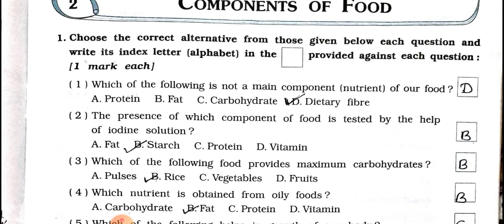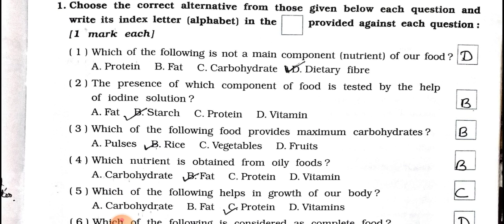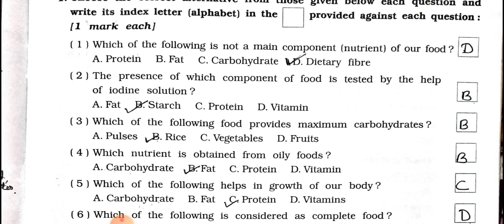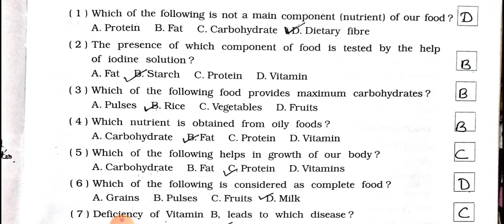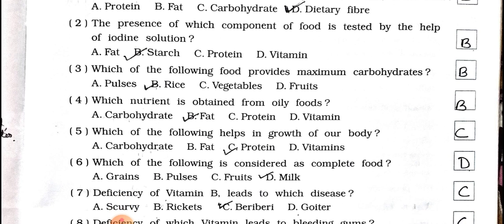Options: A) Protein, B) Fat, C) Carbohydrate, D) Dietary Fiber. Answer is option D — Dietary Fiber. Number two: the presence of which component of food is tested by the help of iodine solution? A) Fat, B) Starch, C) Protein, D) Vitamin. Answer is option B — Starch.